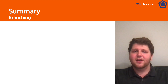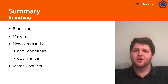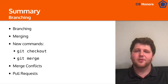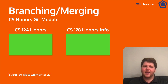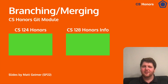In summary, in this video we talked about branching, merging, and the new commands associated with them — including checking out and merging — as well as merge conflicts, which occur when the same line has been changed in two branches and you try to merge them, as well as pull requests. All of this together shows how you can work with a larger team using Git and should hopefully make it easier to work in a group project setting. If you are in CS124 Honors, we'll have another video specifically on branching, merging, and merge conflicts in GitHub Desktop. If you're in CS128, this is the last video. Hopefully you'll want to join CS128 Honors — click the video on the right to check us out.